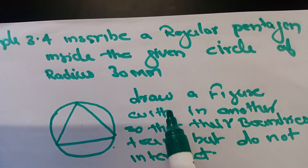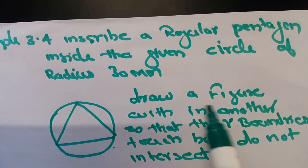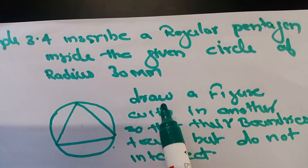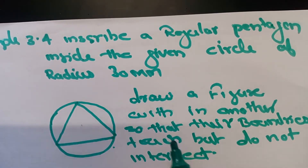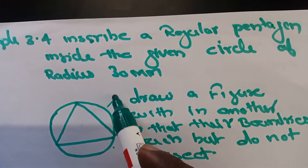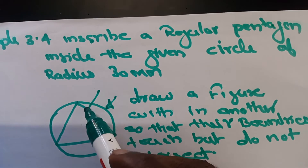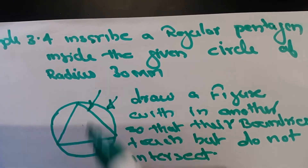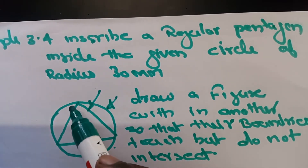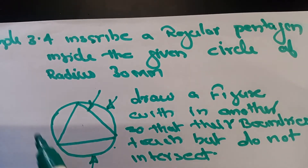First, we have to understand what we mean by inscribing. The definition is: draw a figure within another so that their boundaries touch but do not intersect. This first figure shows a circle and this figure shows a triangle — the triangle is fixed inside the circle. Such type of construction is called inscribing.